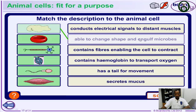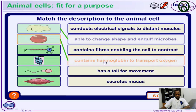It's able to change shape and engulf microbes — meaning it's a white blood cell. It engulfs the microbes and tags them for destruction. Now let's take a look at the red blood cells — they contain hemoglobin and help to transport oxygen; the hemoglobin sticks to the oxygen and transports it around the body. Now let's take a look at the nerve cells or neurons — they conduct electrical signals to distant muscles.